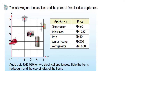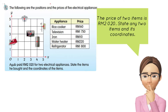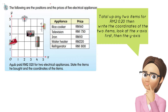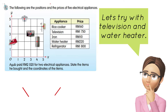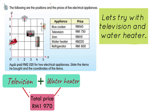First, understand the problem: the price of two items is 2020 ringgit. We need to total up any two items that equal 2020 ringgit. Let's try television and water heater — when we total up, we get 1970 ringgit, so Ayub didn't buy these two items.